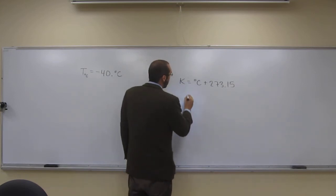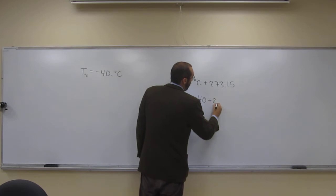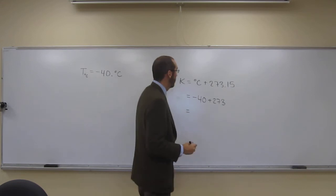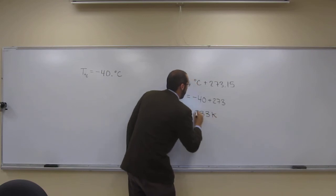So in order to do this, we'll just plug and chug. So negative 40 plus 273, like that. So 273 minus 40 is going to be 233 Kelvin.